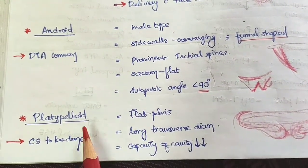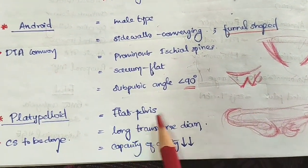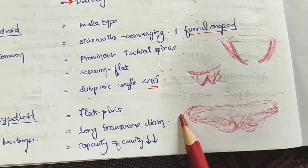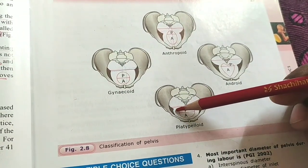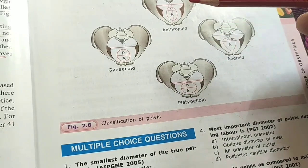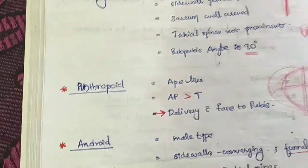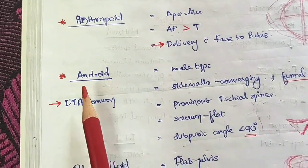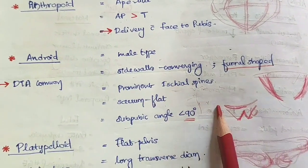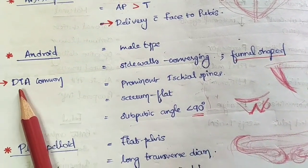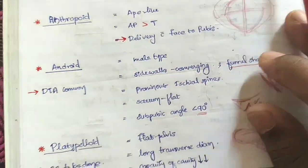The platypelloid pelvis is a flat pelvis with a long transverse diameter and reduced pelvic cavity capacity. Because of this, cesarean section is often required. There can also be a deep transverse arrest. These are the four types of pelvis: gynecoid, anthropoid, android, and platypelloid.